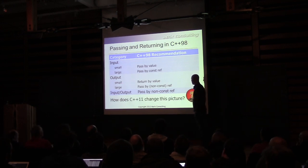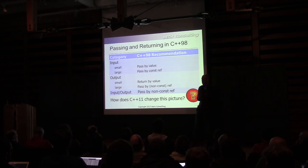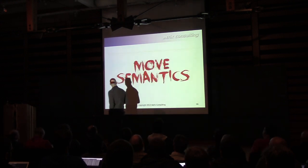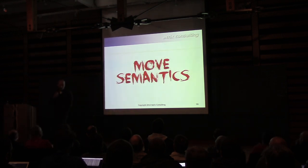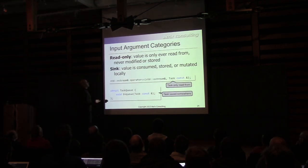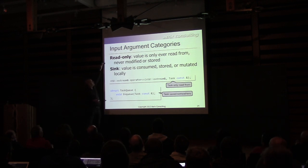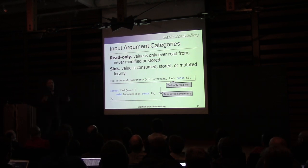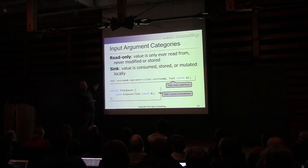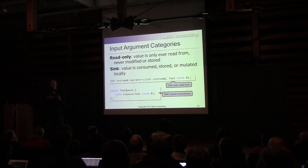So we want to talk about how this is going to change in C++11, and in order to do that I'll have to talk about move semantics a little bit — not all that much, so don't be scared. Let's break input categories down into read-only and sink. A read-only input parameter is something you obviously only read from — you never modify it locally, never store it anywhere. A sink is a value that's consumed, stored, or mutated while that function executes.